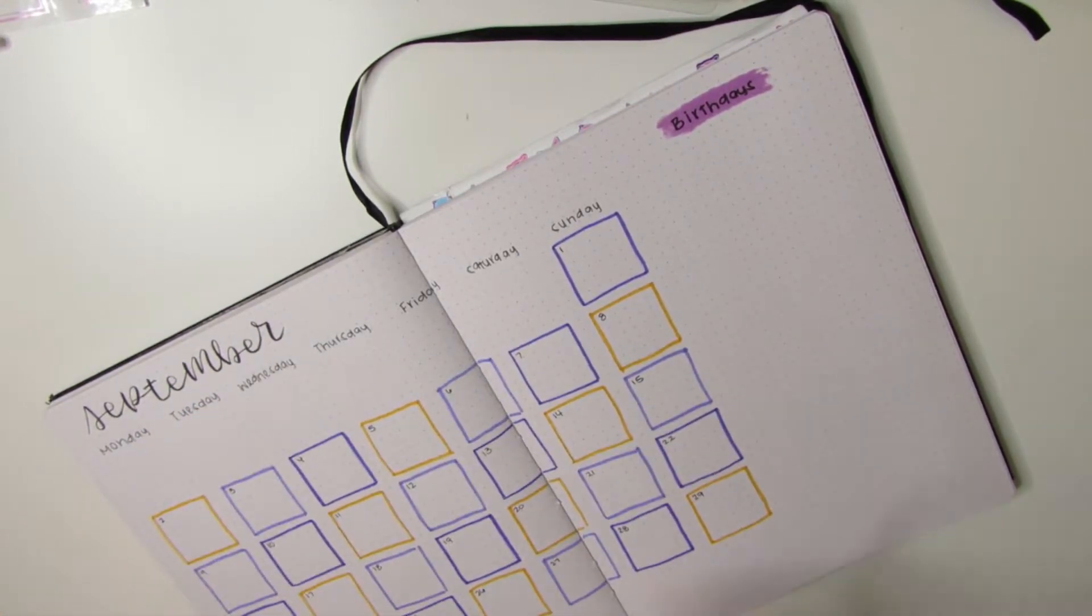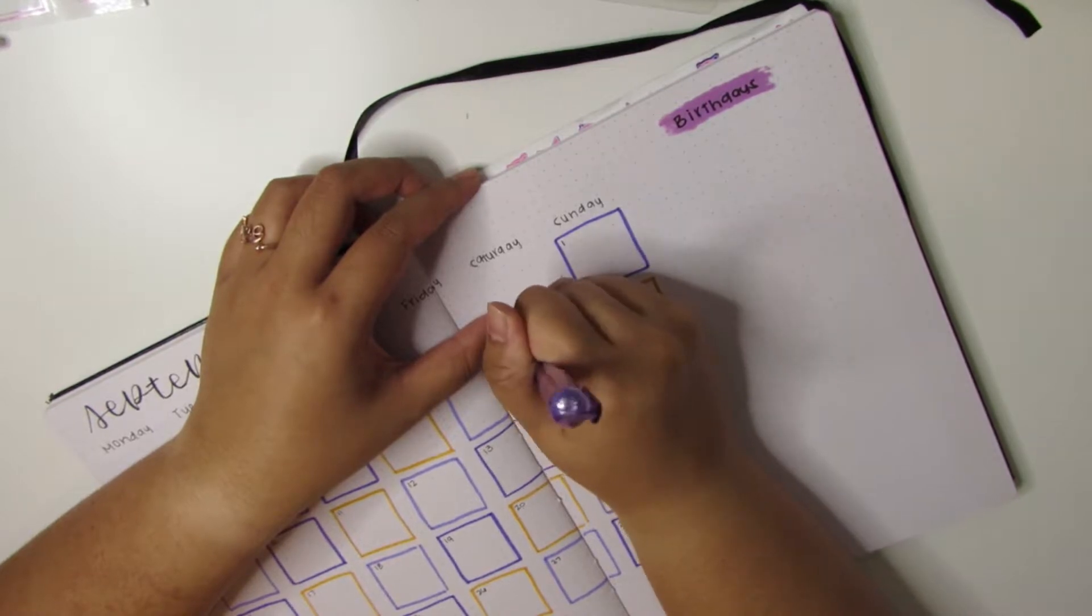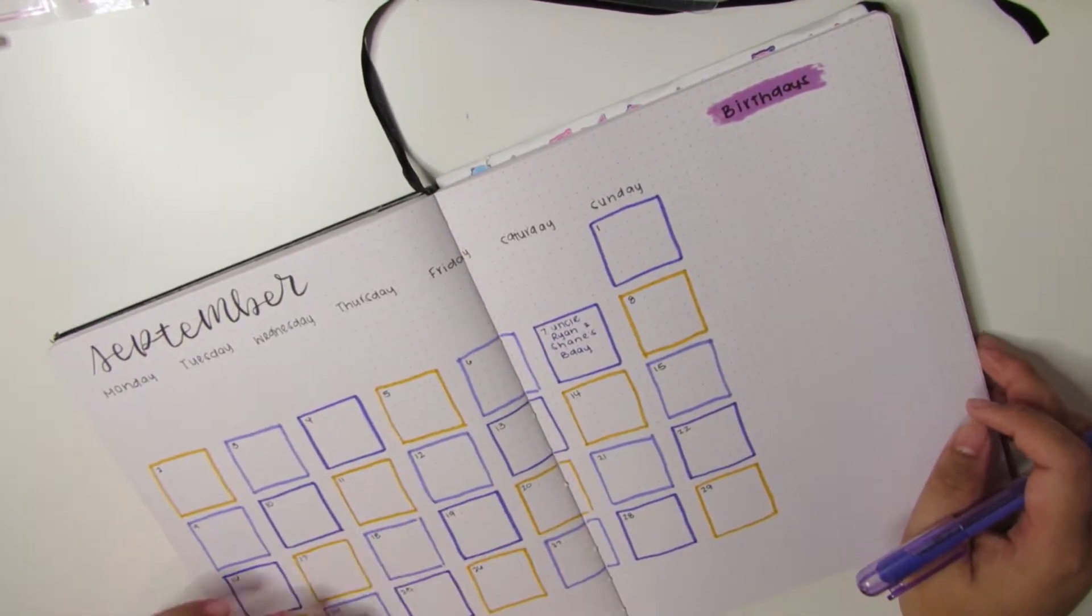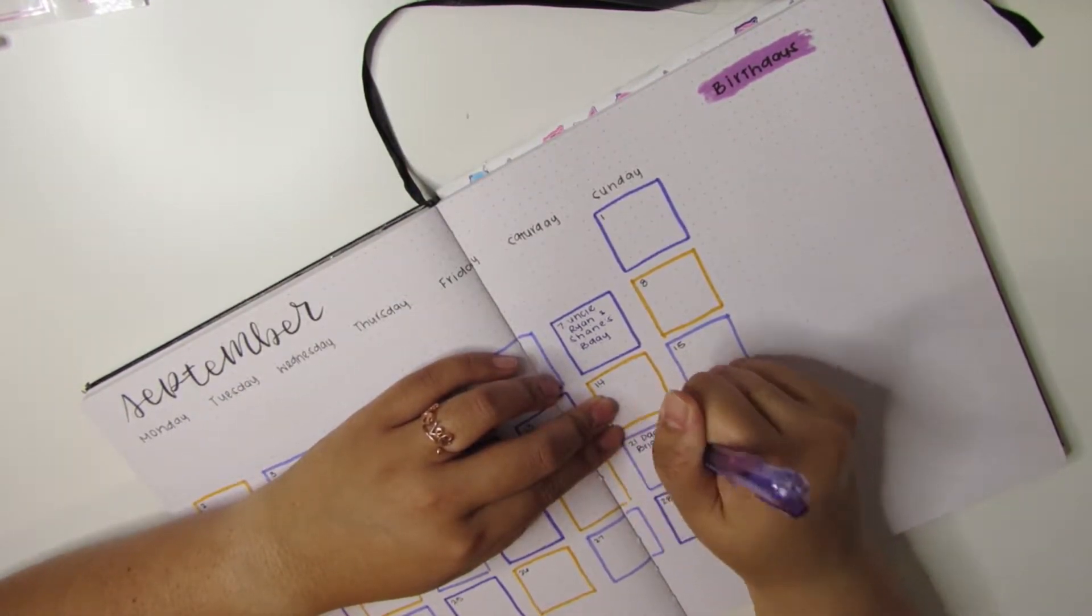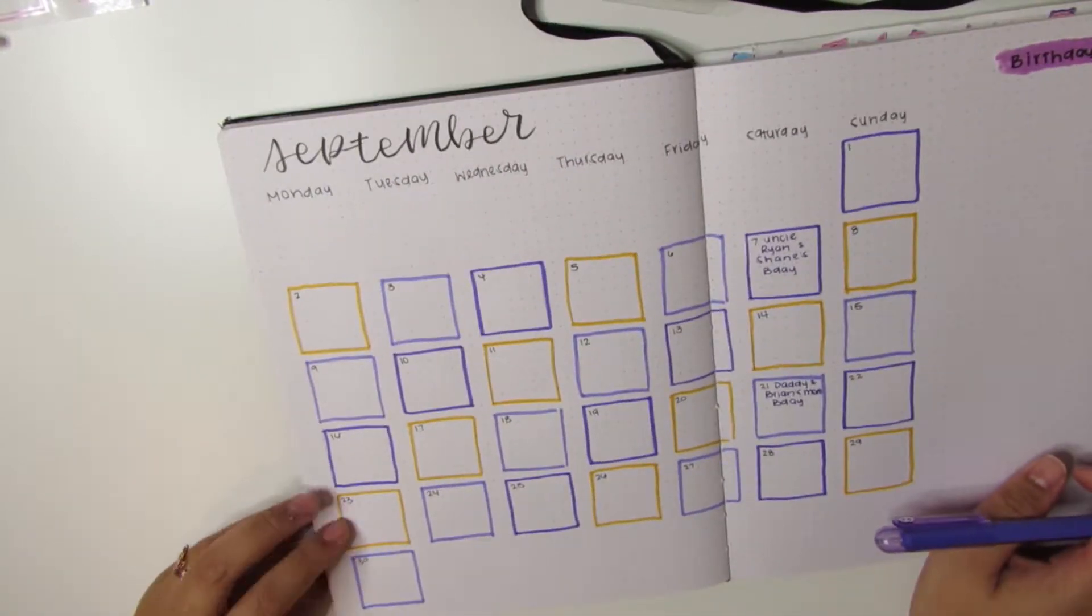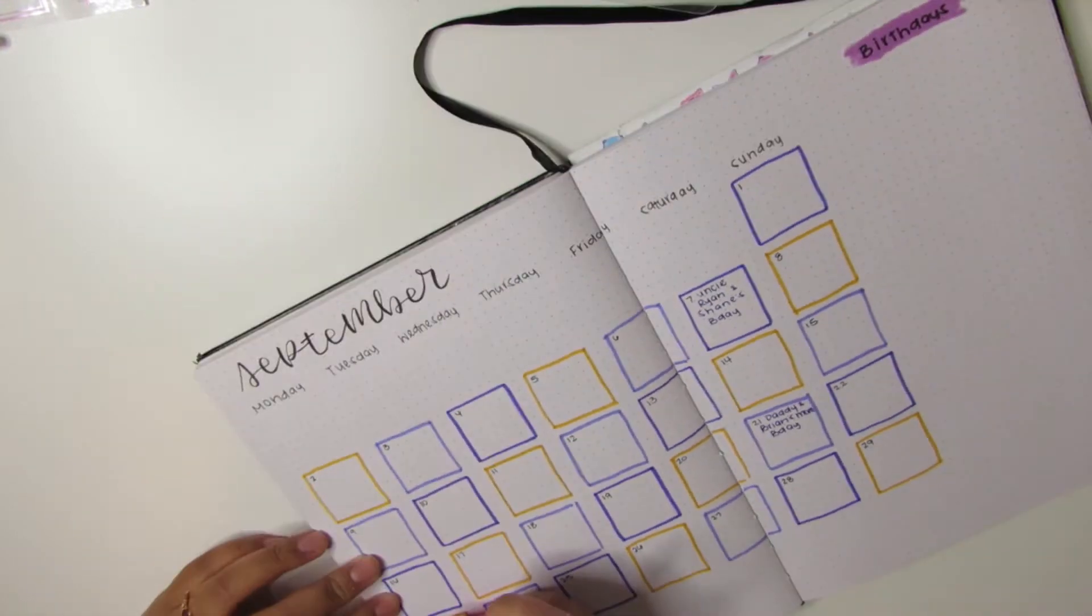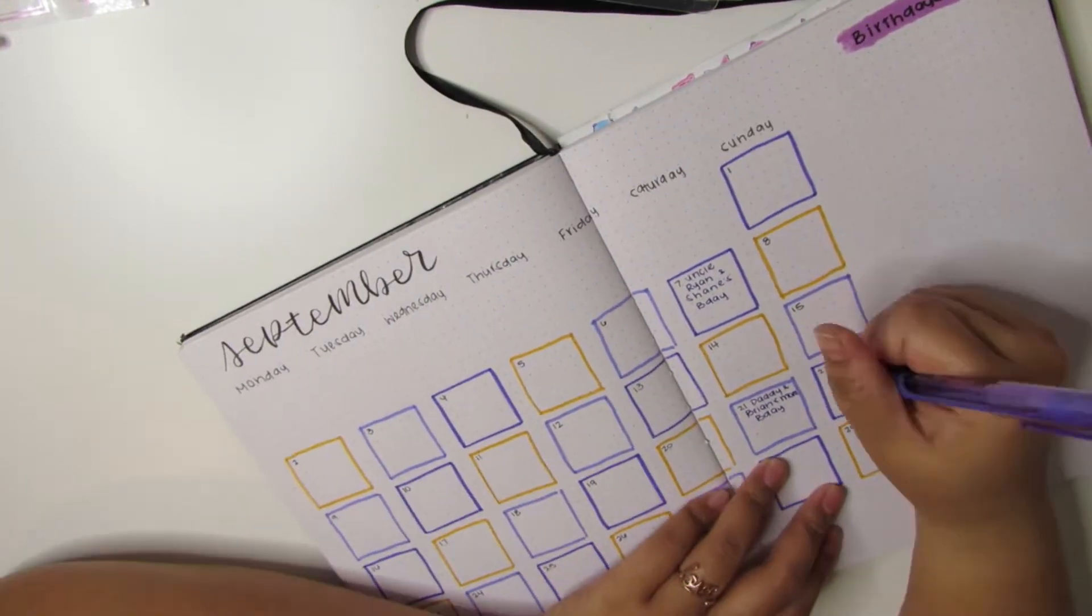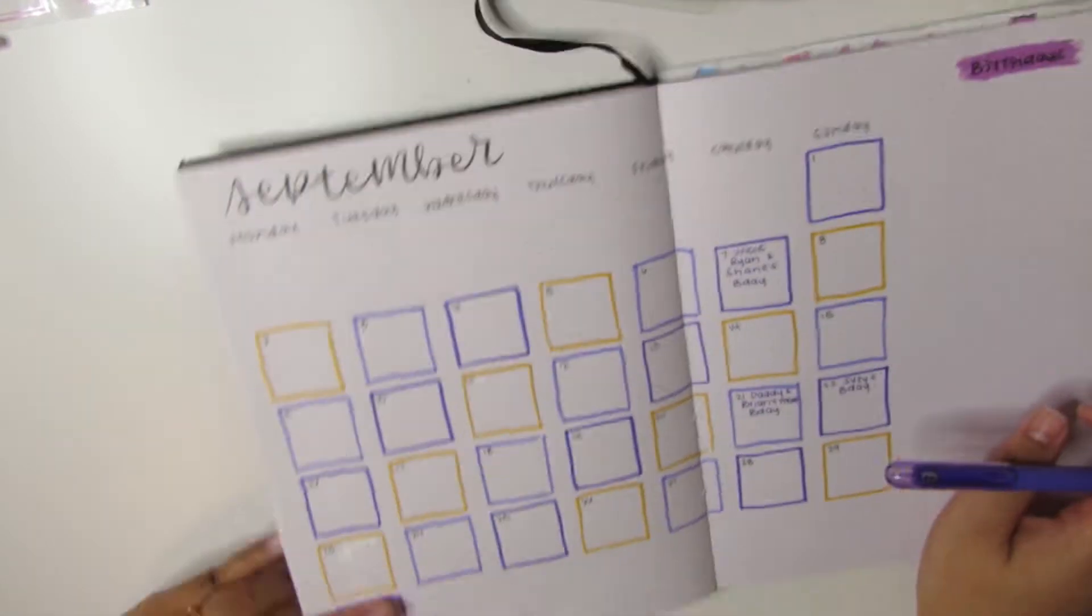I'm taking the Inkjoy from Paper Mate and writing it down in the actual date so I can see where it is. Before I would just create a list or put the days vertically and write the birthdays horizontally on an important date section.